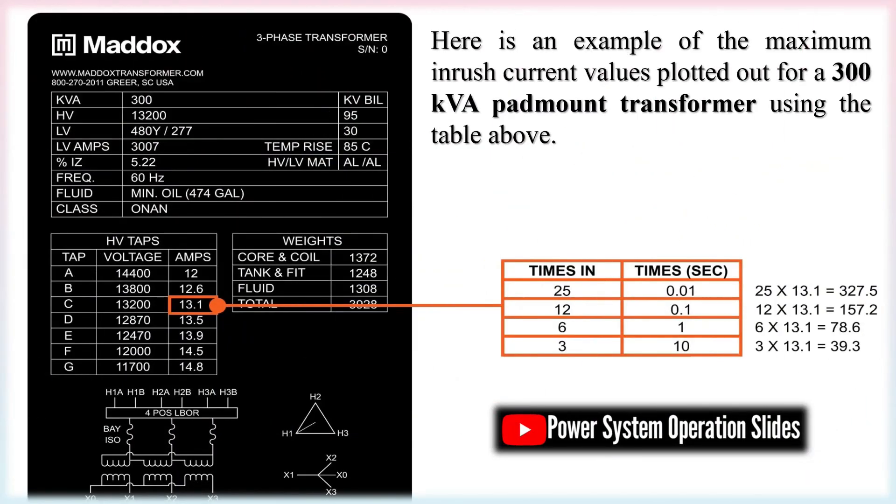It's also important to note that the magnetizing current can be either positive or negative, resulting in a corresponding positive or negative residual magnetism.